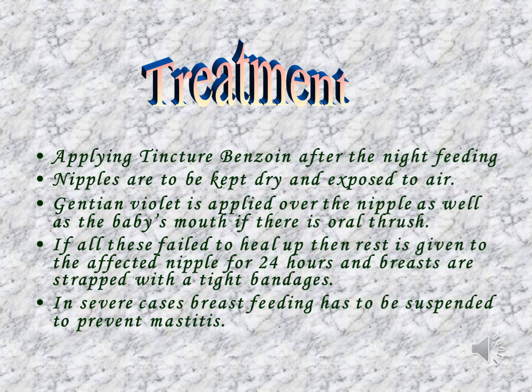Treatment for cracked nipple: Apply tincture benzoin after night feeding. Nipples are to be kept dry and exposed to air. Gentian violet is applied over the nipple as well as the baby's mouth in case of oral thrush. If all these fail to heal, rest is given to the affected nipple for 24 hours and the breast is strapped with tight bandages. In severe cases, breastfeeding has to be suspended to prevent mastitis, as this condition may progress to mastitis if untreated.